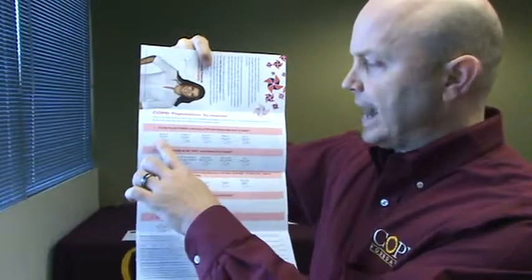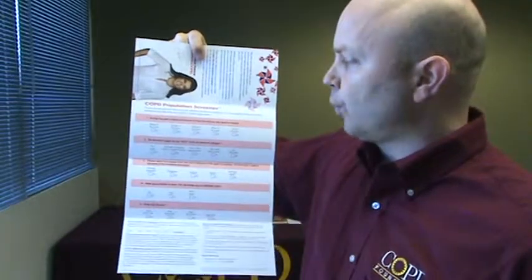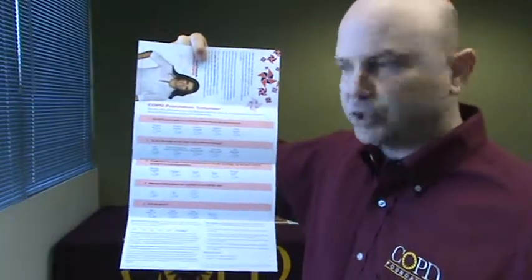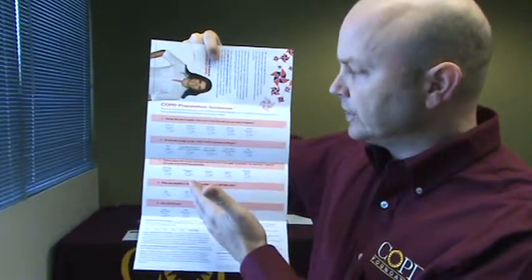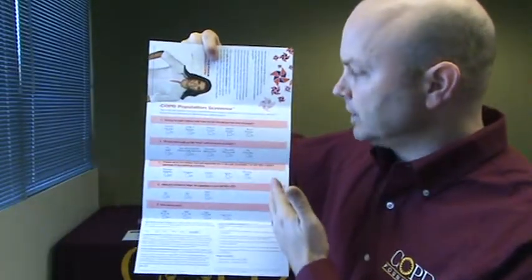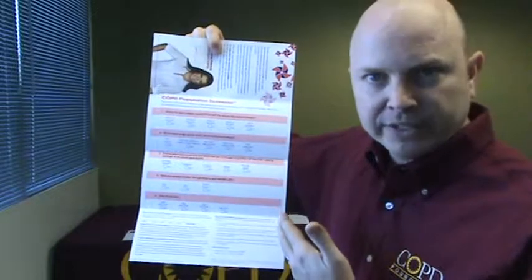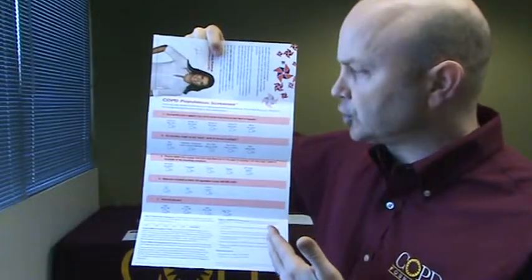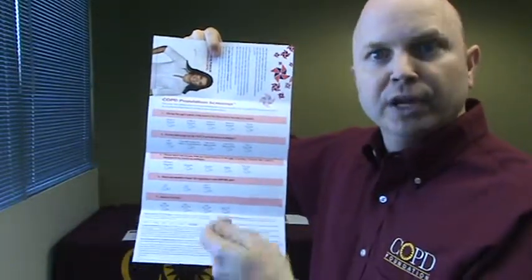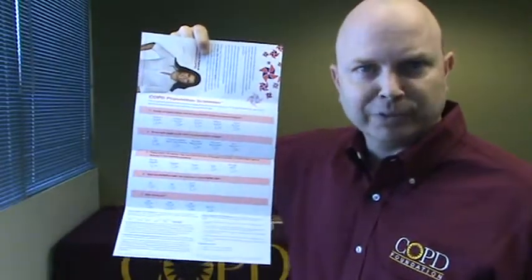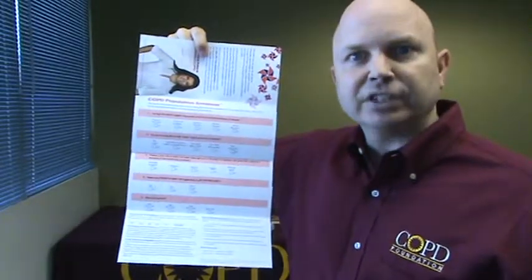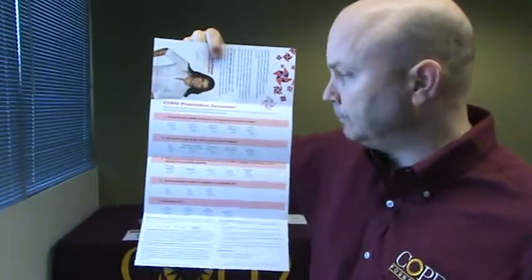We're going to ask question one: during the past four weeks, how much of the time did you feel short of breath? The participant will select none of the time, a little of the time, some of the time, most of the time, or all the time. Each response is scored. The lower the number, the better their lung health is. The higher the number, the more significant symptoms are identified — and that's obviously a poor score.